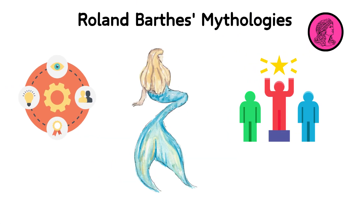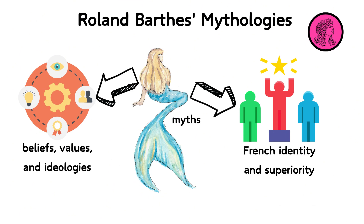In Barthes' view, myths serve to naturalize particular beliefs, values, and ideologies, making them appear timeless and universal rather than historical and culturally specific constructs. For instance, when examining the portrayal of wine in French society, he shows how it is imbued with meanings about French identity and superiority. This process of myth-making obscures the underlying cultural and ideological implications, making it seem natural to associate wine with French culture.